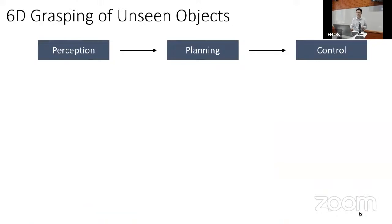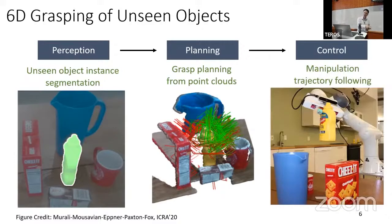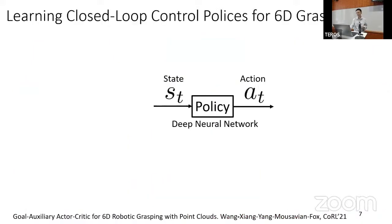More recently, people have focused on grasping unseen objects without requiring 3D models. Using an RGB-D camera, unseen object instance segmentation can segment objects not seen during training. For each segmented object we get a point cloud, and approaches can plan grasps from partially observed point clouds, then plan a trajectory to reach the grasp. But again, this pipeline suffers from open-loop execution — there's no re-planning or re-perception during execution, which can cause problems.